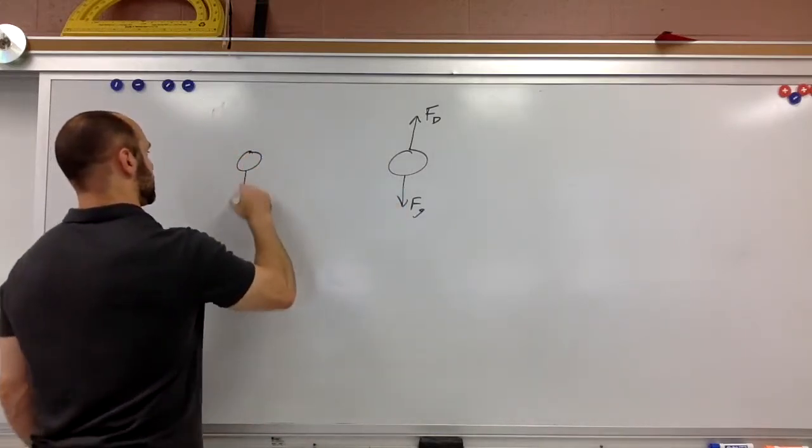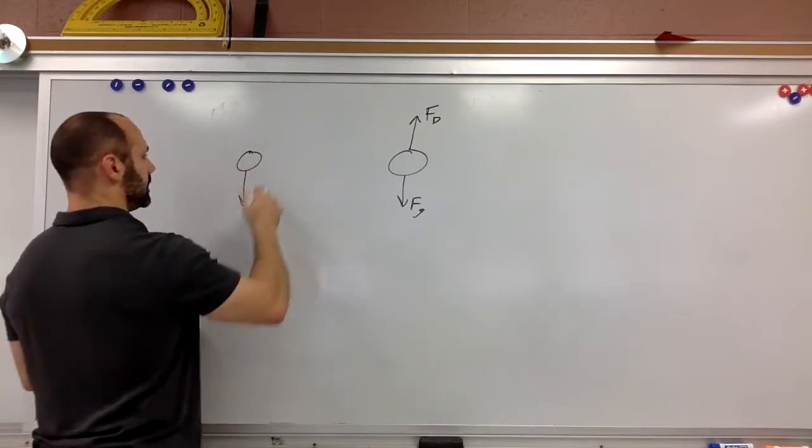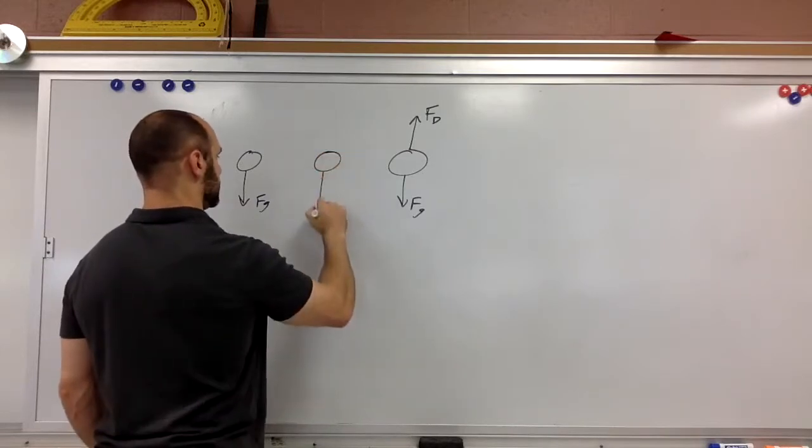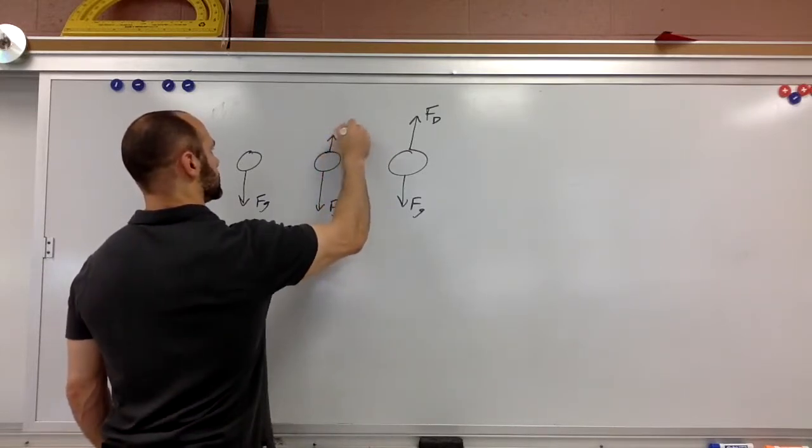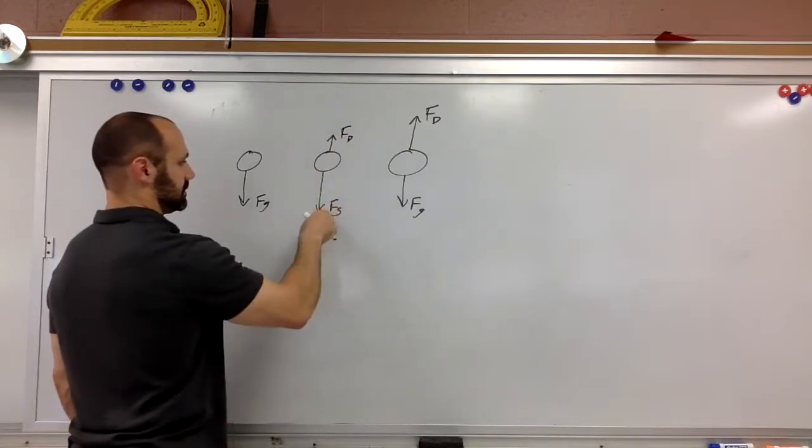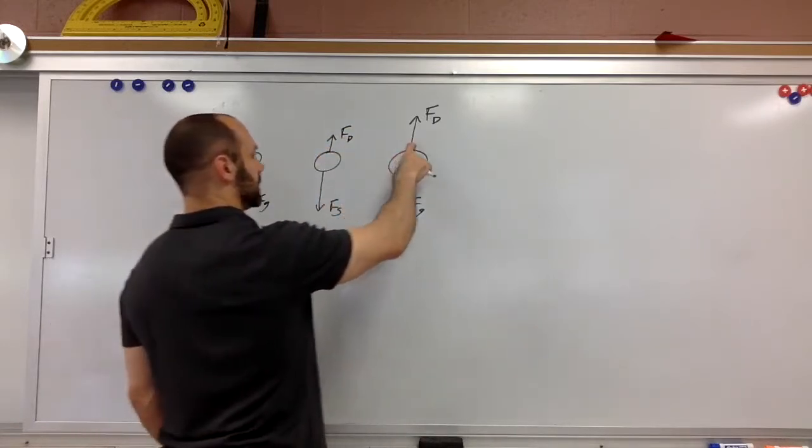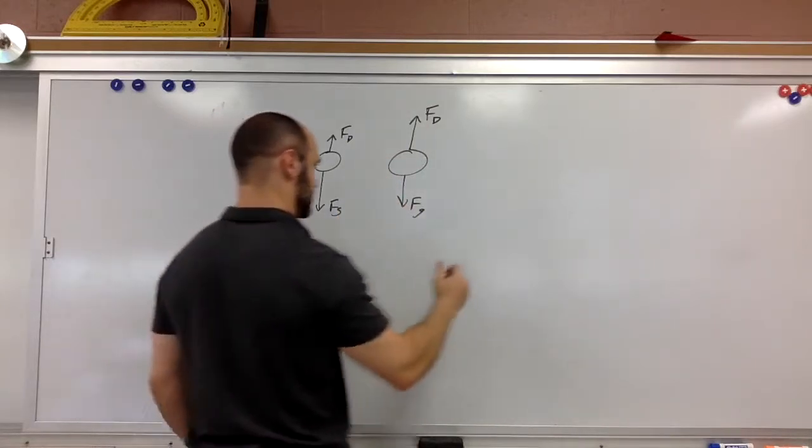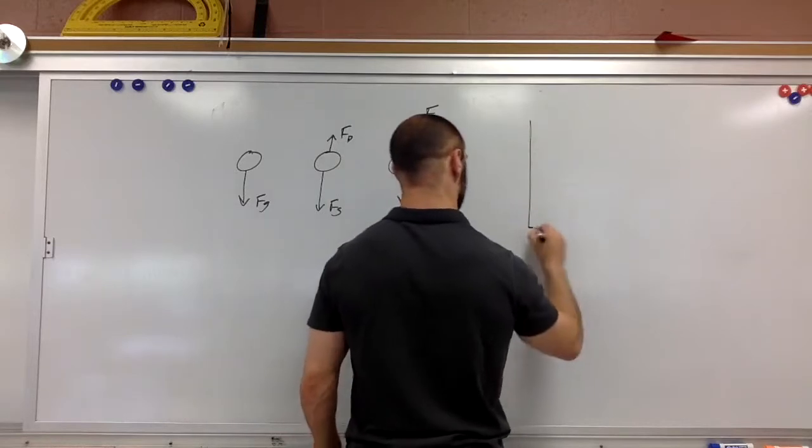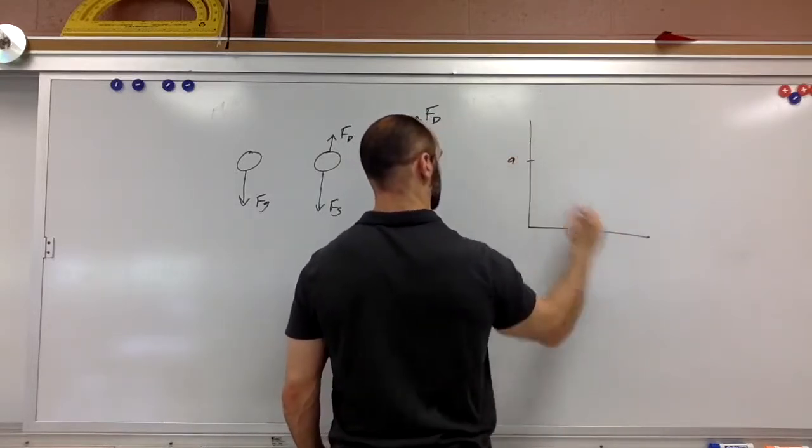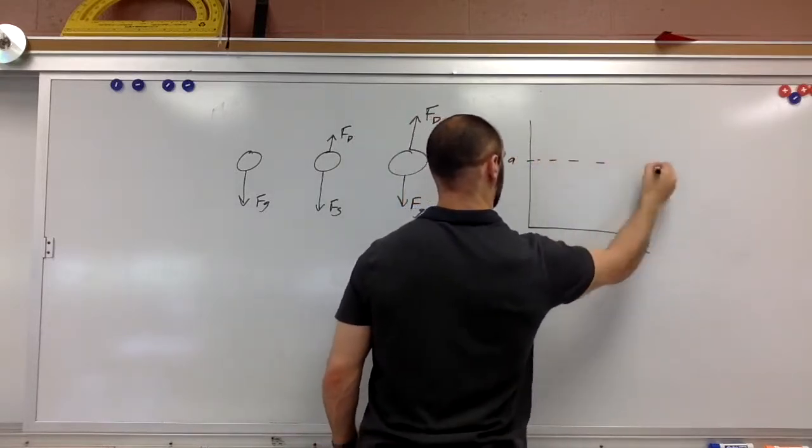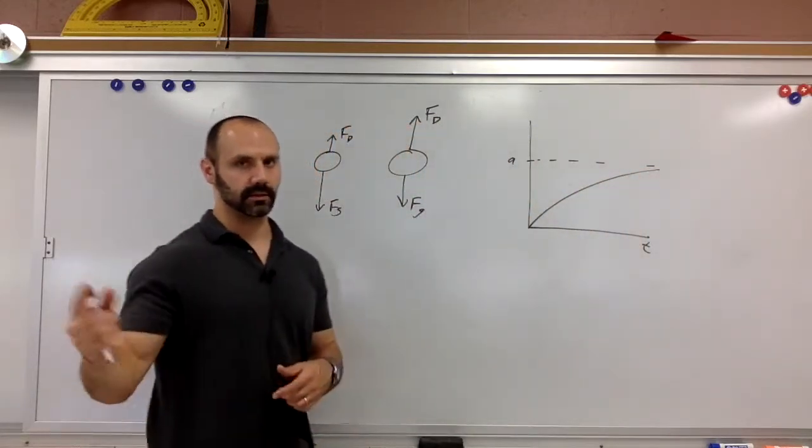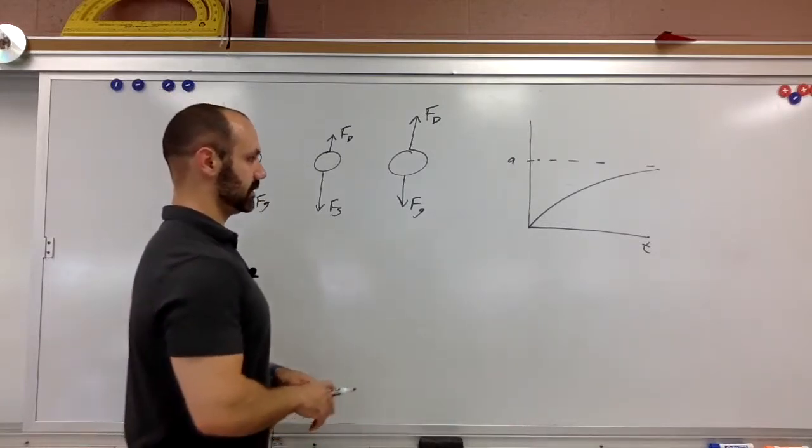So when something is first dropped, force of gravity is pulling on it, it has no velocity, and so that's what the free body diagram looks like. As it's speeding up, here's the force of gravity, but the drag force is less than this. That means this is still accelerating. And then at some point it gets to this place where these two forces cancel out. The acceleration graph then is going to look something like this. Acceleration versus time. We're going to get into that a lot more in the next lecture, but just so you can see it now, that's what it looks like.